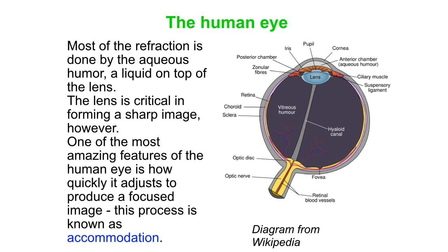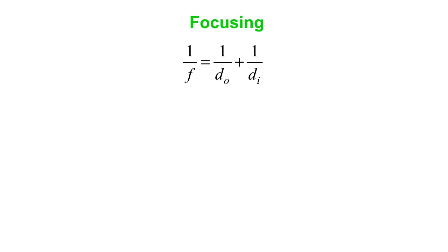So let's talk about how that focusing gets done. So we have our typical 1 over F equals 1 over DO plus 1 over DI equation. 1 over F is 1 over the object distance plus 1 over DI, F being the focal length. And let's just sort of think about the interplay between these variables both for the human eye and for the camera.